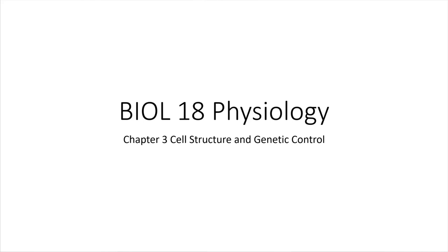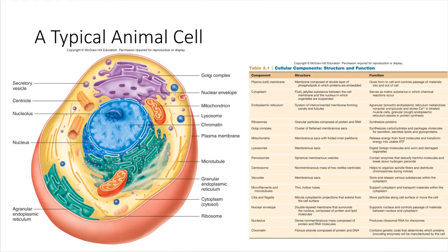We're going to start with a typical animal cell, like we would find in people. A typical animal cell has three major components, three major parts to its cell body.